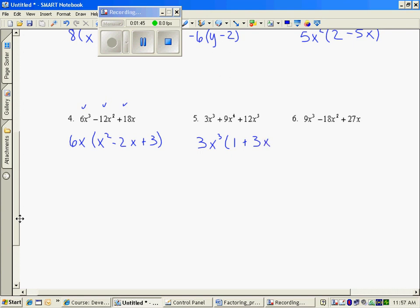3x cubed times 3x would be 9x to the 4th, and a 4x squared, because 3 and 2 make 5.